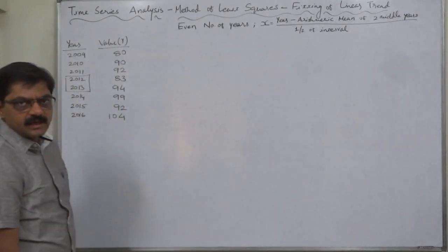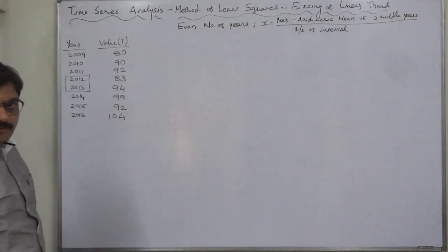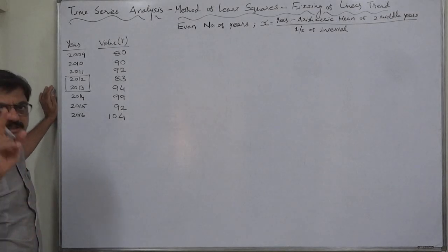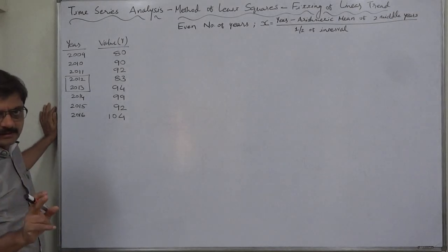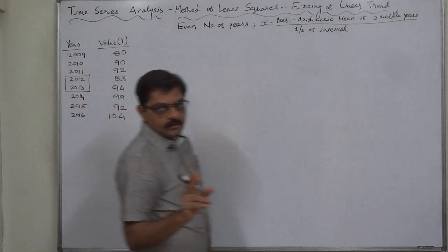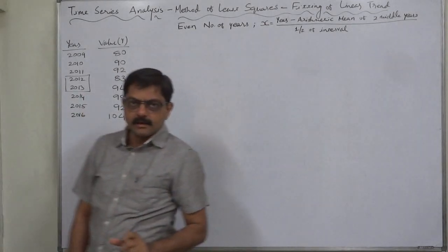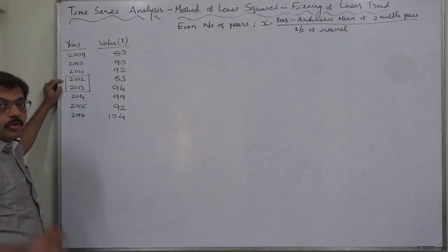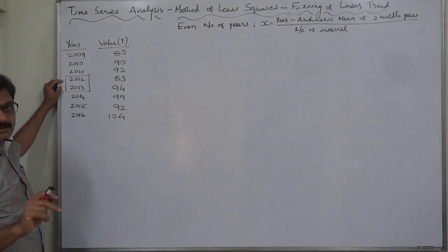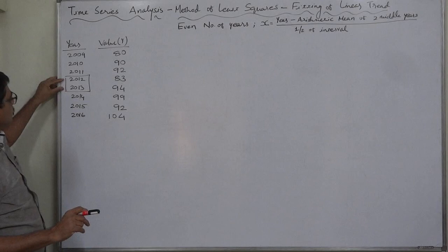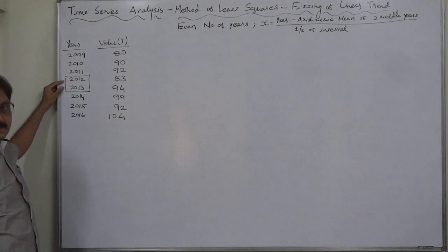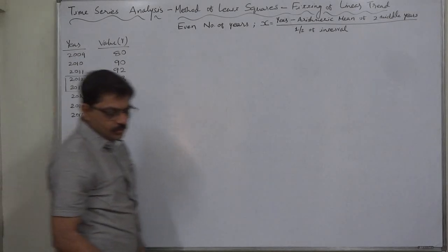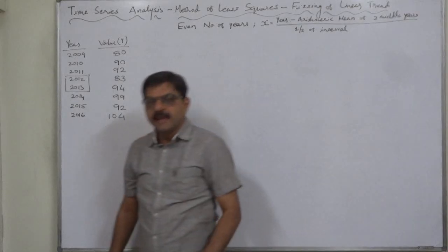There is not much difference in cases having odd number of years and even number of years. The biggest difference is in case of odd number of years, there can be a single year in the middle of the data. That means the origin can be only a single year. But in case where there are even number of years, there can be no single year as a middle year. There are two middle years, four and four exactly in the middle. We cannot select any one year.